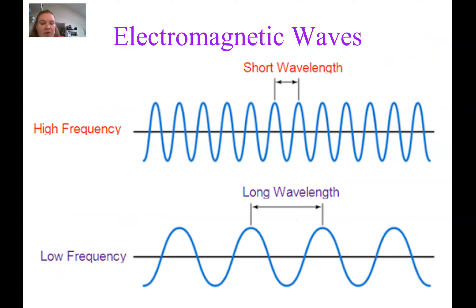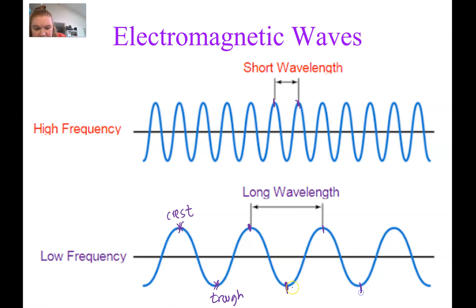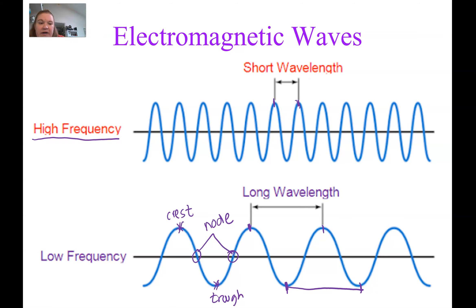Here are a couple waves to show a difference. We have a short wavelength on the top — measuring from crest to crest — and a longer wavelength on the bottom. The top of the wave is a crest, the bottom is a trough, and any time it crosses the middle is called a node. The wave on top has a shorter wavelength, which means it has a higher frequency. Because those waves are closer together, they pass a point more frequently. The bottom one has a longer wavelength and therefore a lower frequency.